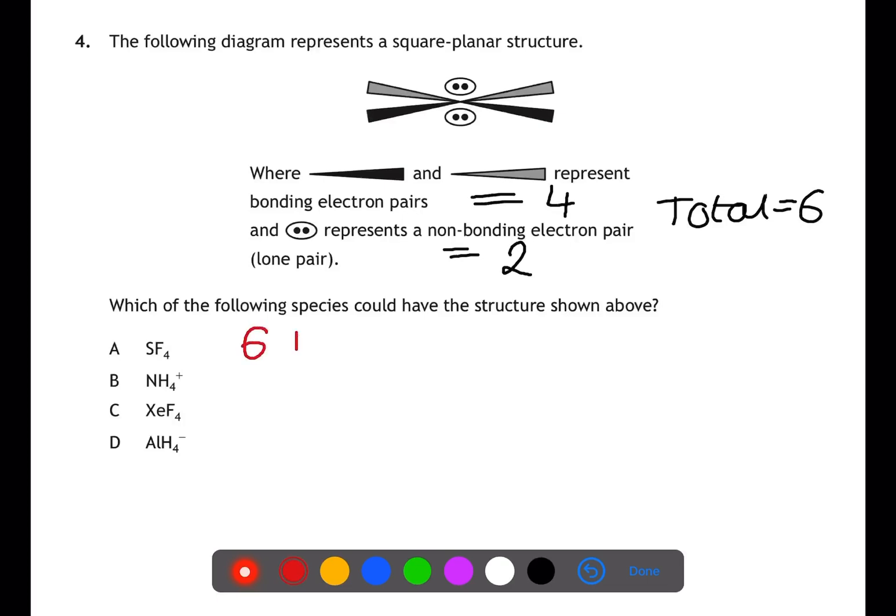In the first answer, we have sulfur which has six outer electrons plus four fluorines minus no charge. This gives a total of five electron pairs which cannot be the answer. In B, we have nitrogen with five outer electrons plus four hydrogens minus one for the charge, giving four electron pairs. In C, we have xenon which has eight electrons plus four fluorines minus no charge to give six electron pairs. This must be our answer.